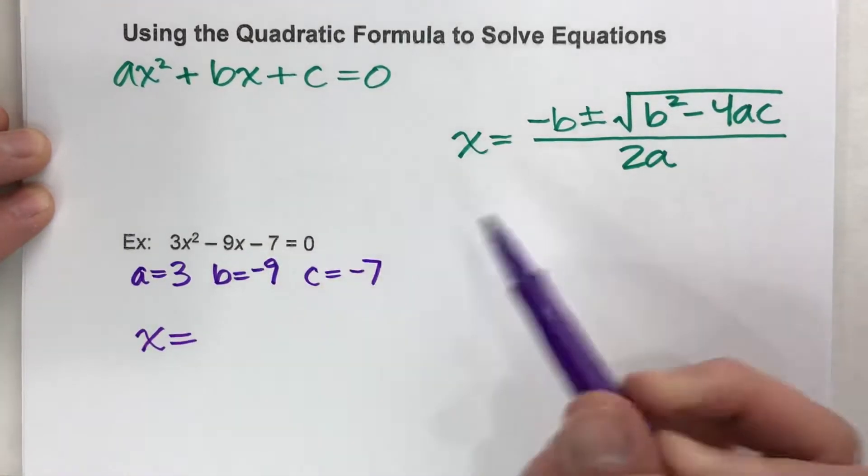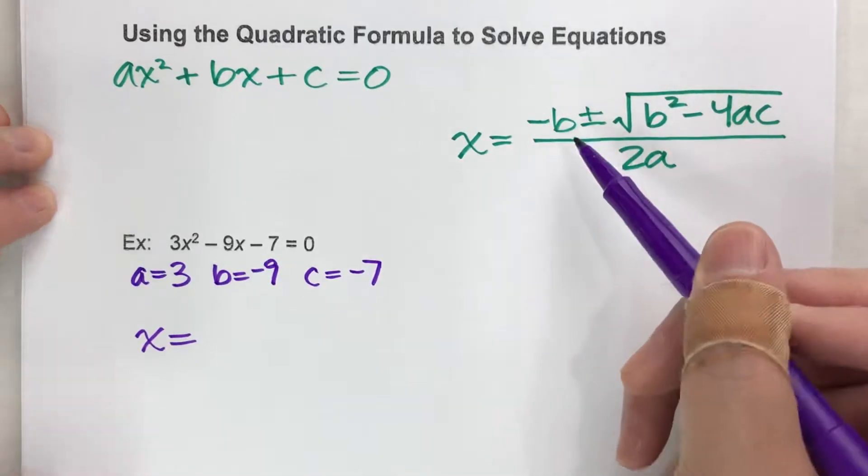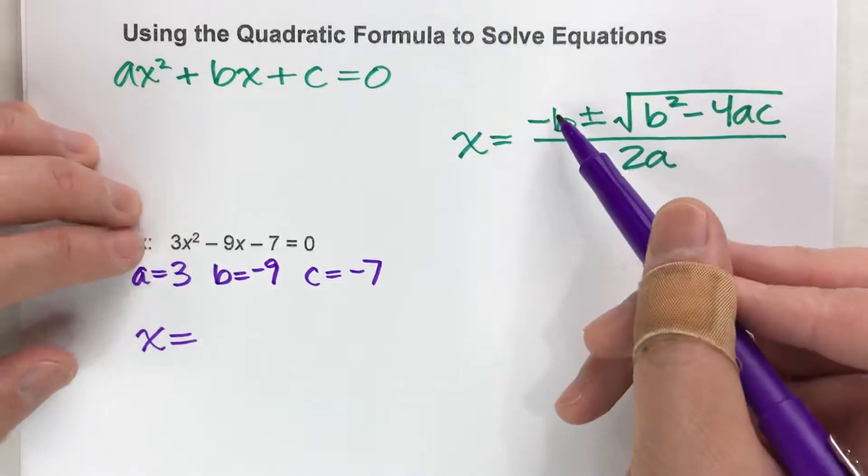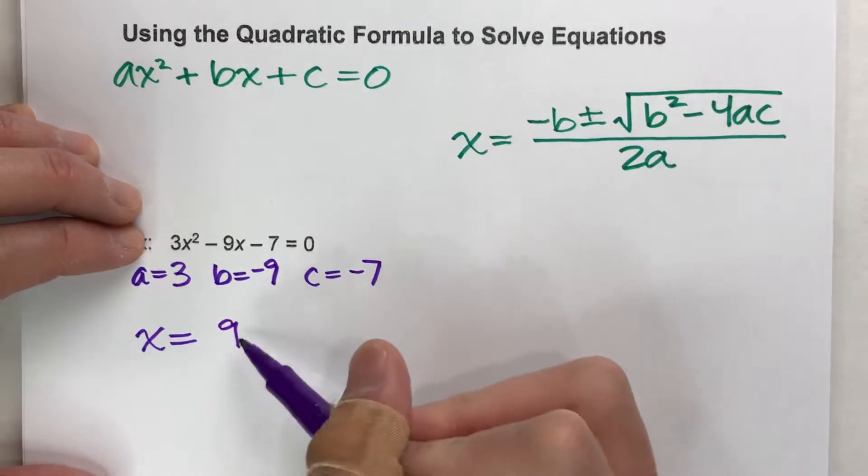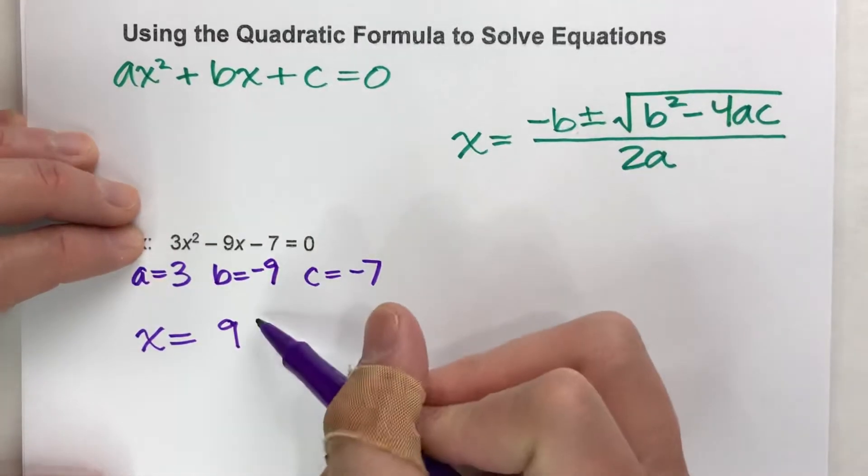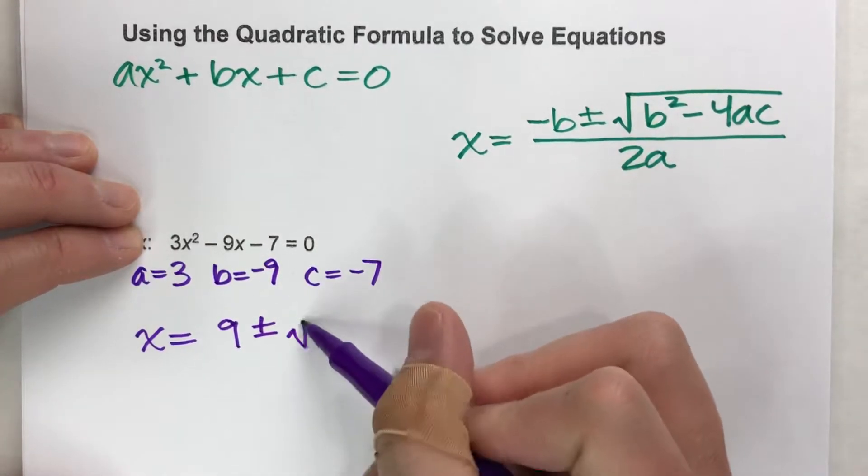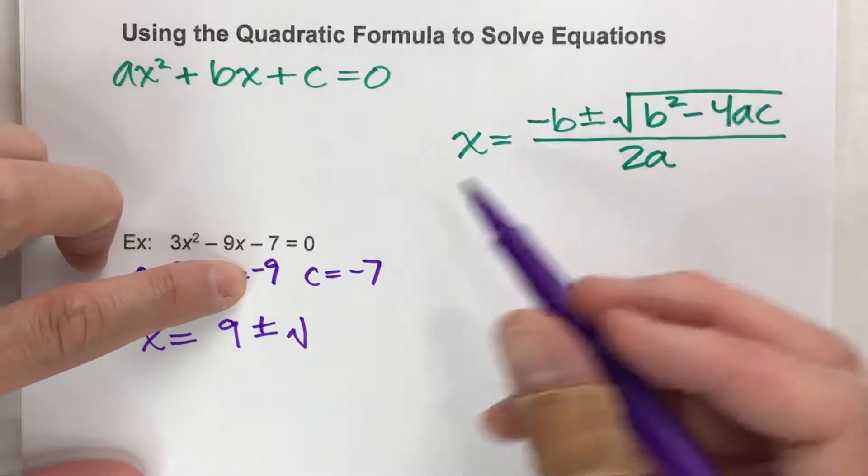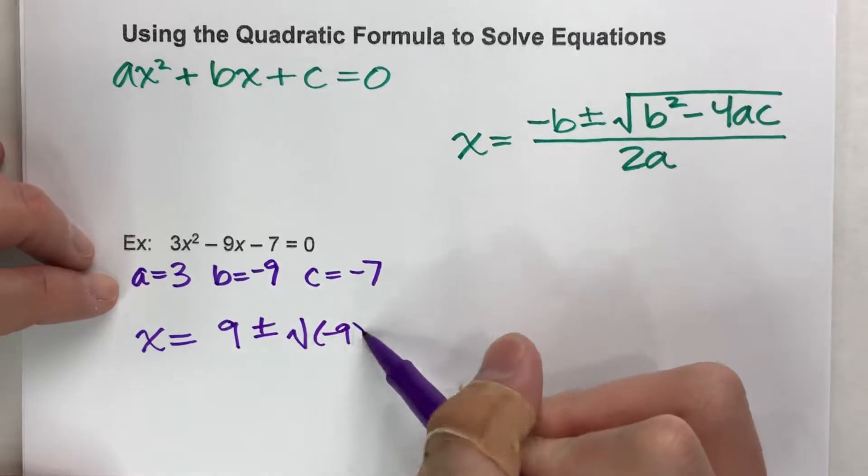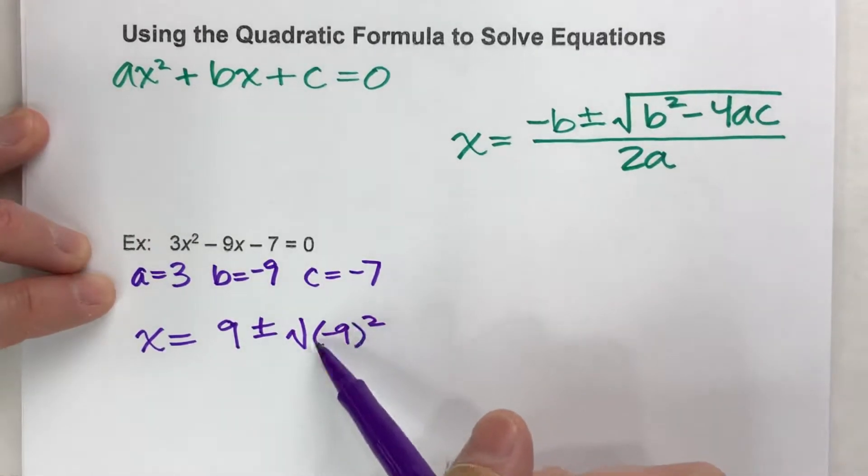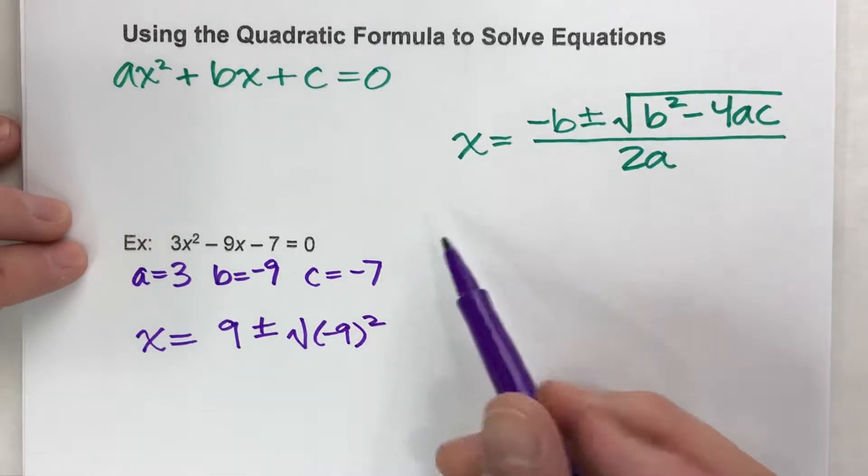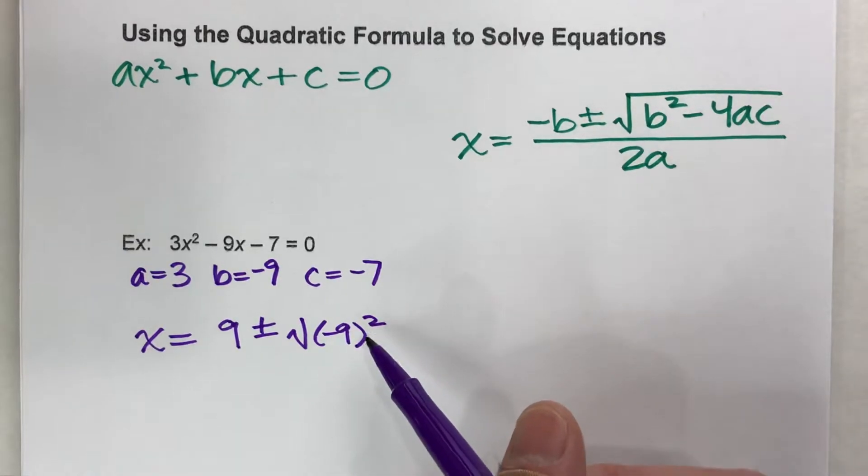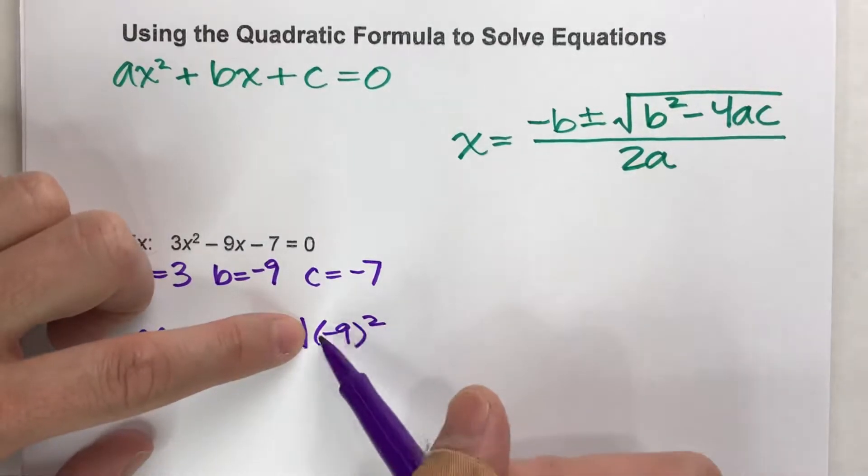x is equal to the opposite of b. b is negative 9, so the opposite of b is going to be positive 9. Plus or minus the square root of b squared. Now, b is negative 9, so I'm going to do negative 9 squared. And notice, I put parentheses around the negative 9, because if I was to put this into a calculator, I would want to make sure all of this was squared.